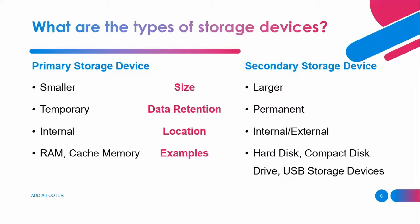Examples of primary storage devices are random access memory or cache memory. Secondary storage device examples are hard disk, compact disk drive, USB storage devices, or memory cards.